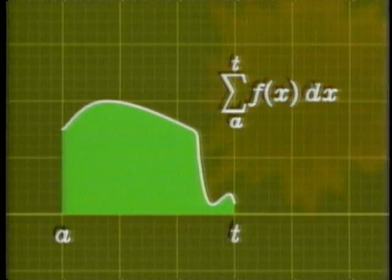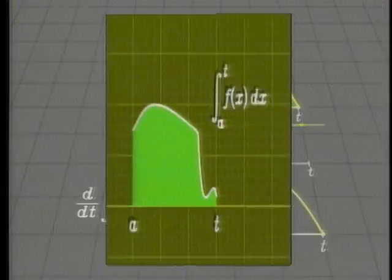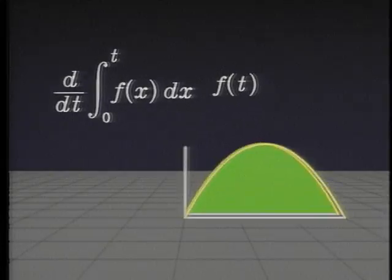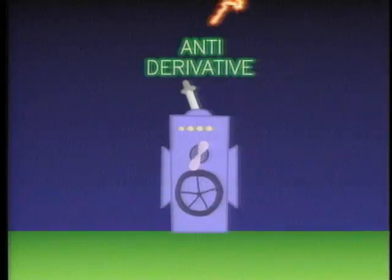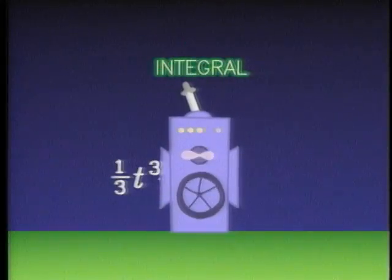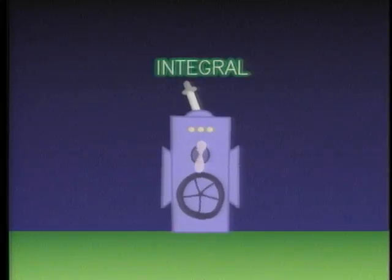The first fundamental theorem of calculus says that the derivative of the integral is the original function. So, running the derivative machine backwards takes an integral. Now, we can calculate the volumes of any shape.